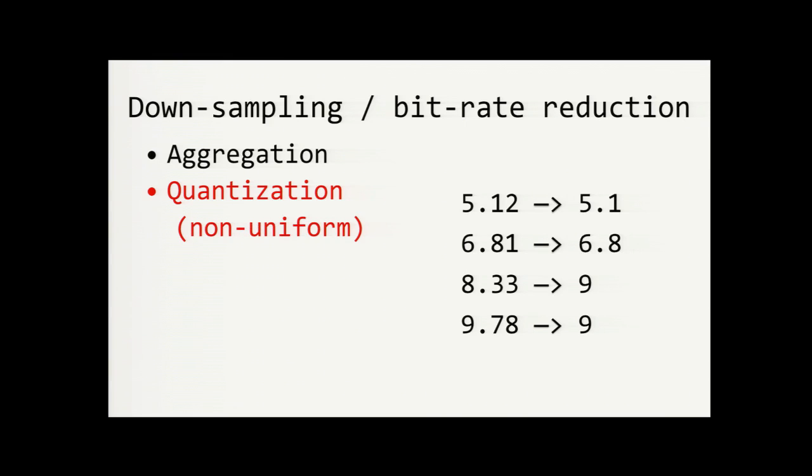Quantization can be non-uniform based on perception. For example, the human eye is more sensitive to certain colors than others, so the granularity could be flexible to account for that. Maybe we want nearest tenth precision for values less than seven, but maybe we want nearest odd integer precision for values that are greater than seven. And, of course, these techniques are not mutually exclusive. We could first aggregate the values and then quantize them.